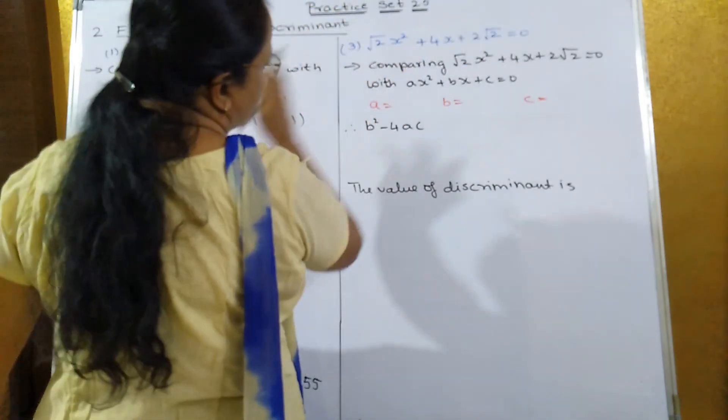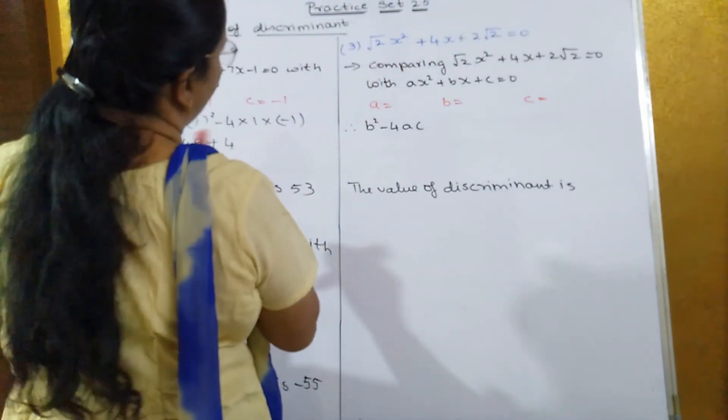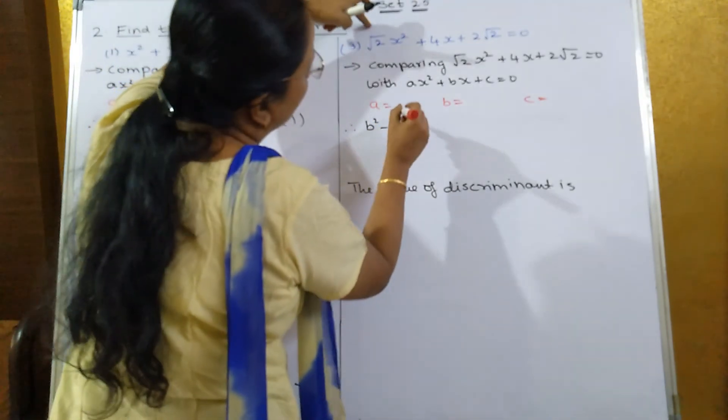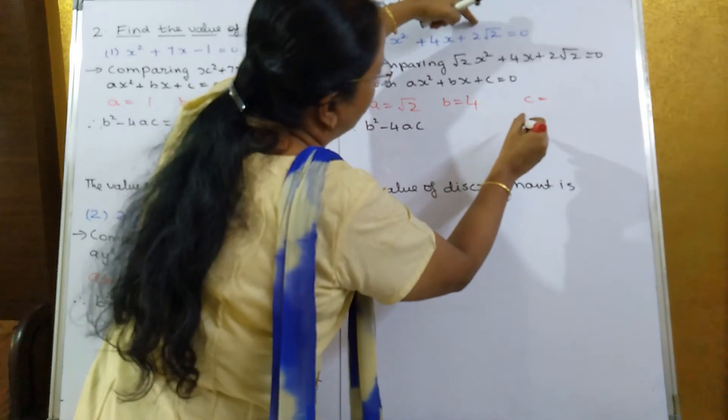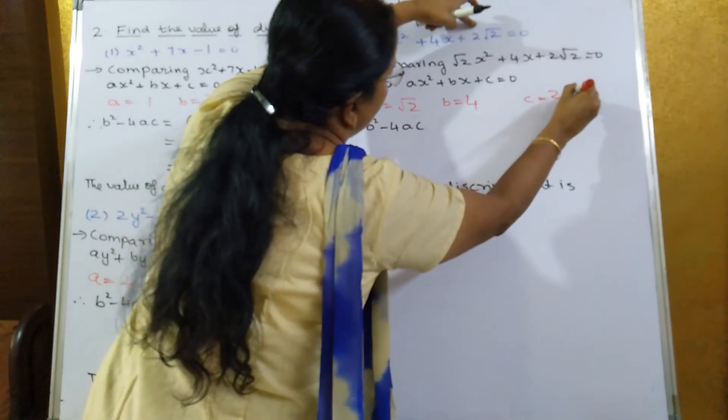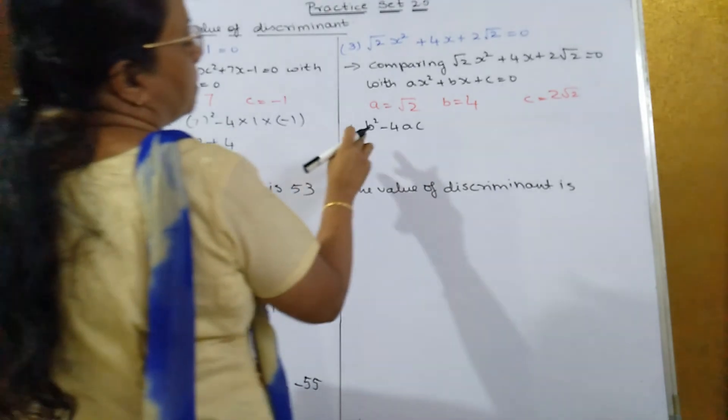What is the value of a? a is what? √2. What is b? b is what? 4. And what is c? c is equal to 2√2. So discriminant: b² - 4ac is equal to how much?